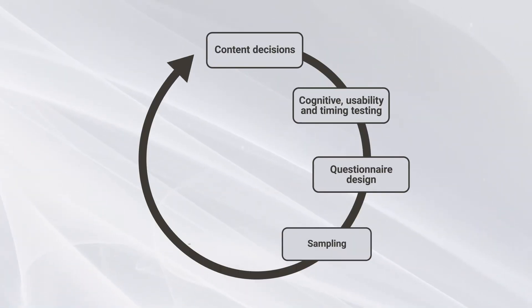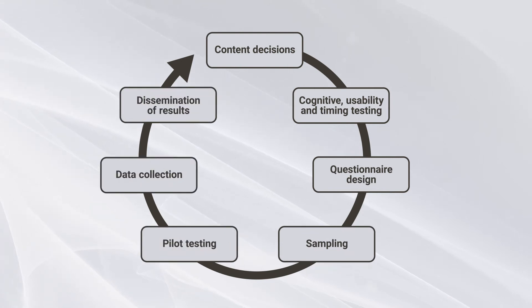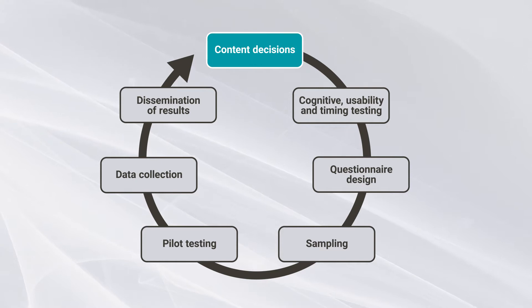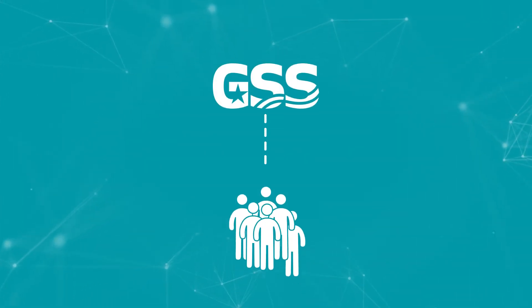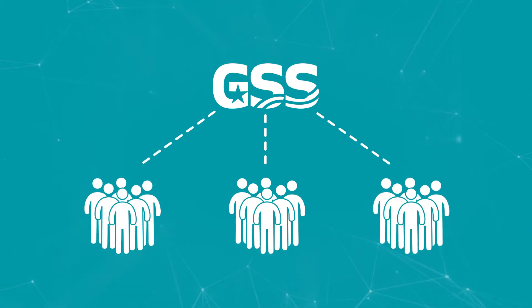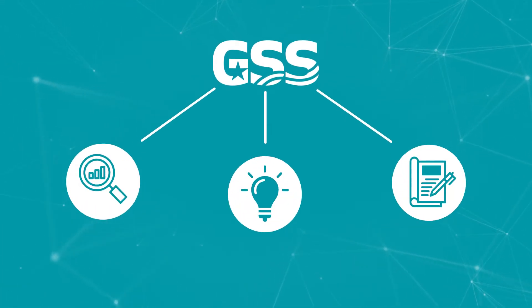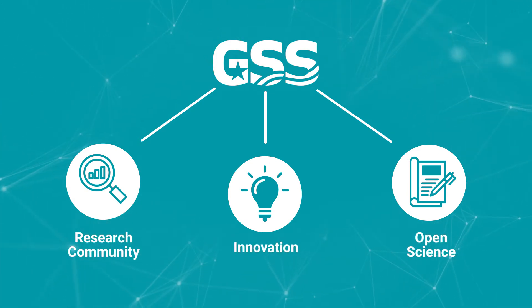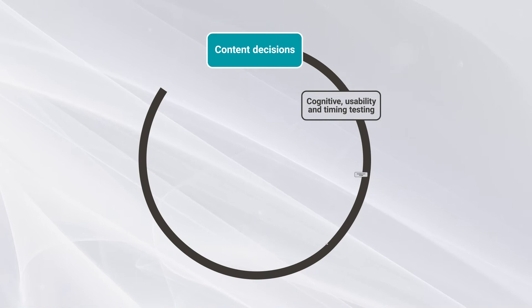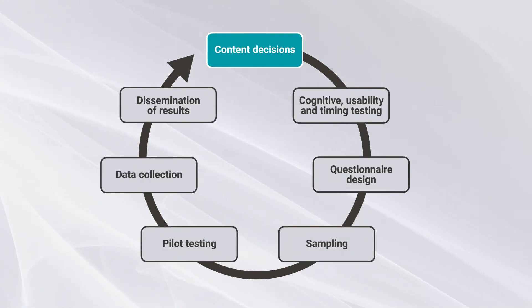Bringing the GSS to life is a long and careful process designed to ensure the highest quality results. It starts with deciding which questions to ask. While some core questions are repeated to show changing attitudes over time, the GSS also adds new content by soliciting an open call. This promotes our connection to the research community, innovation, and open science. Ultimately, the GSS board decides which items are selected.